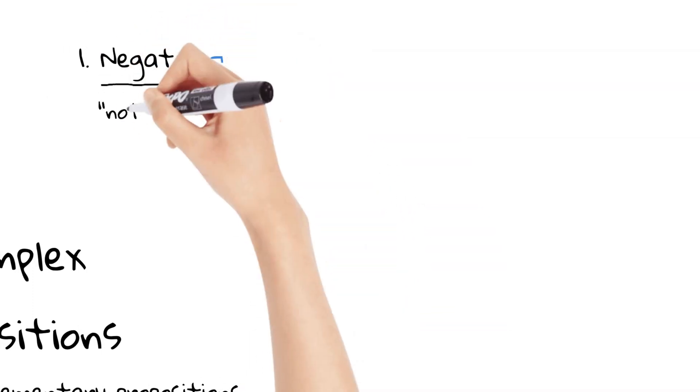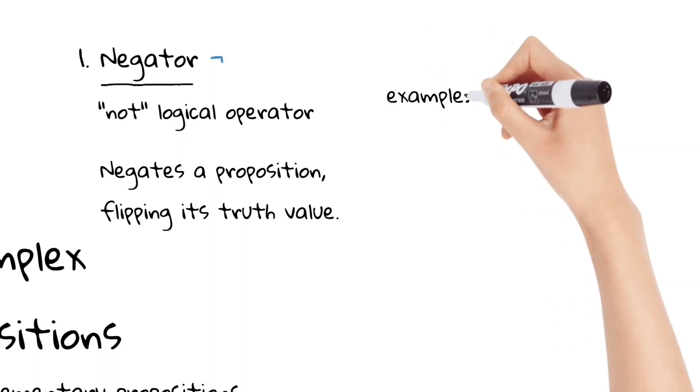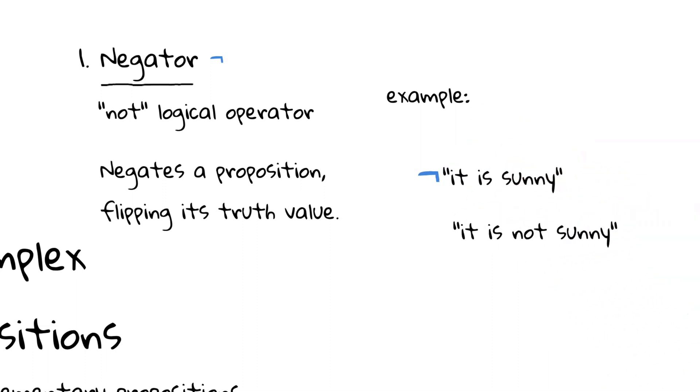One, the negator, or not operator. The negator is used to negate a proposition, essentially flipping its truth value. For example, if we have the elementary proposition, it is sunny, we can apply the not operator to create the complex proposition, it is not sunny. In this case, the complex proposition, it is not sunny, is true, if the elementary proposition, it is sunny, is not true.